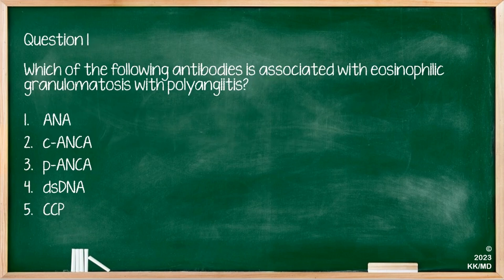Which antibody is associated with eosinophilic granulomatosis with polyangiitis (eGPA)? Options are ANA, C-ANCA, P-ANCA, dsDNA, or CCP antibodies. This is an ANCA-associated vasculitis, and the correct antibody is P-ANCA. C-ANCA is associated with GPA (granulomatosis with polyangiitis).